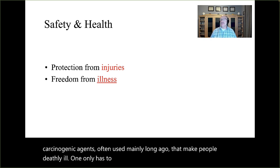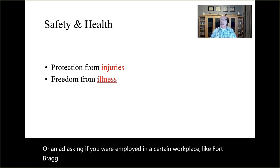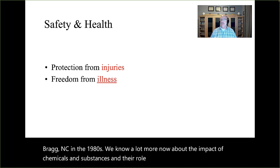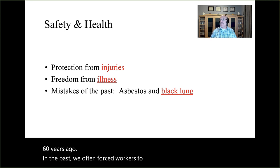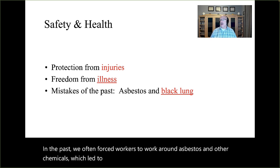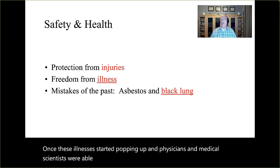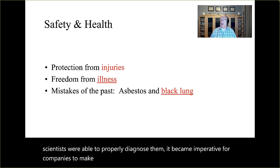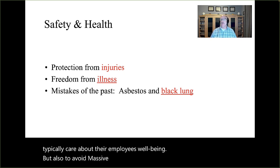One only has to turn on the TV and see commercials about asbestosis and mesothelioma, or an ad asking if you were employed at a certain workplace like Fort Bragg, North Carolina in the 1980s. We know a lot more now about the impact of chemicals and substances on illness than we did 50 or 60 years ago. In the past, workers were forced to work around asbestos, which led to asbestosis. Black lung is another serious illness that occurred to coal miners. Once these illnesses started appearing and were properly diagnosed, it became imperative for companies to make workplace changes — both because they care about employees' well-being and to avoid massive liabilities.